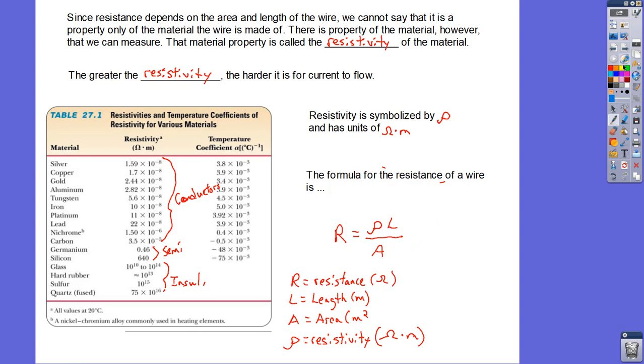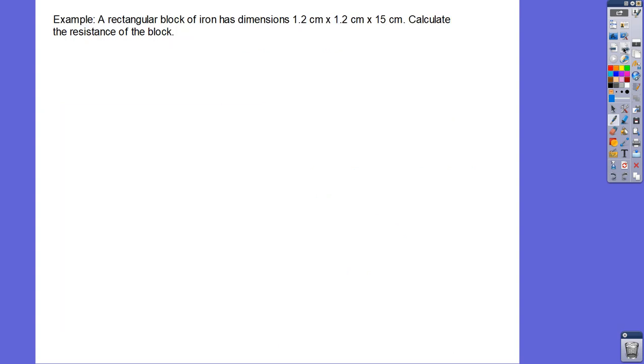So let me do a quick problem like this. I have to admit I just took this right out of the book. You can find it there. So we've got this rectangular block made of iron. And so we've got 1.2 centimeters by 1.2 centimeters by 15 centimeters. And we want to calculate the resistance of the block. So we know the resistance is based on the resistivity. It's based on the length and it's based on the area. Alright, so resistivity, we're just going to look that up in that chart.